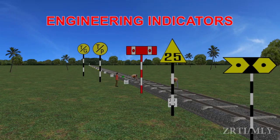Engineering Indicators shall be provided both by day and night to indicate the place where a stop or a reduction of speed is required when restriction is for more than a day. There are four types of Engineering Indicators.